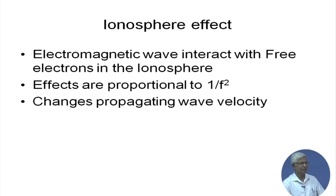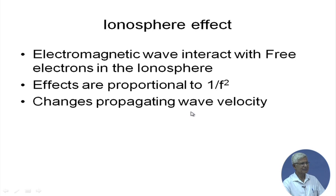Some of the effects: the ionosphere will change the propagating wave velocity. When the signal passes through it will not travel at the free-space velocity of light — it will slow down. This slow-down causes a delay effect. For general communication such as video broadcasting, data, or audio, this delay is tolerable. However, for satellite-based navigation the delay is very important because it is used to calculate range. At higher frequency, since the effect is 1/f², this propagation delay is very very small.